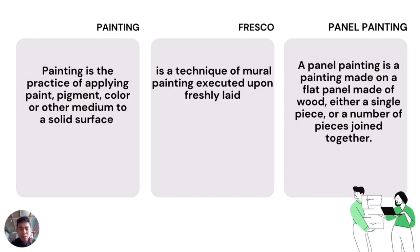Fresco is a technique of mural painting executed upon freshly laid plaster. A panel painting is a painting made on a flat panel made of wood, either a single piece or a number of pieces.